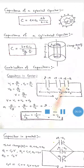For a spherical capacitor with inner radius A and outer radius B (B > A), the capacitance is C = 4πε₀·AB/(B − A). For a cylindrical capacitor, the capacitance is C = 2πε₀L / ln(B/A), where L is the length and A, B are the inner and outer radii.